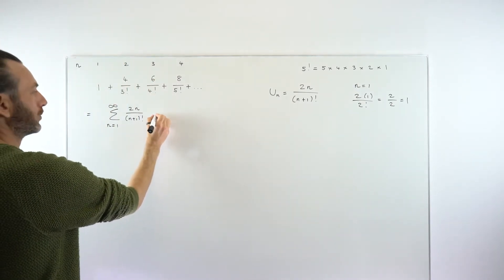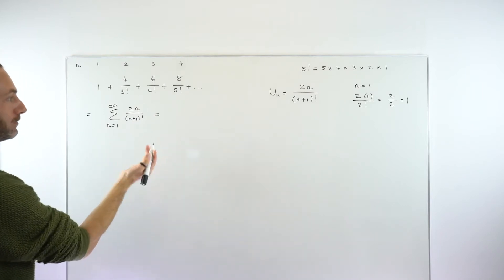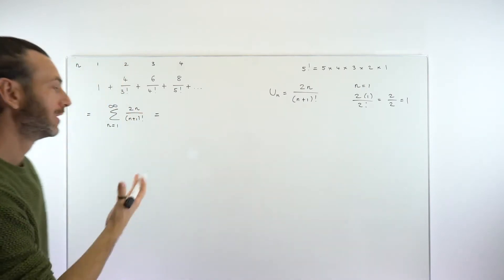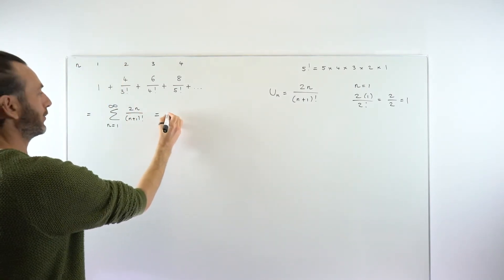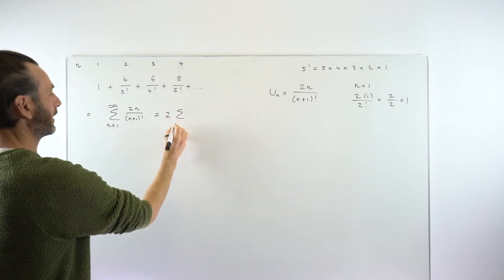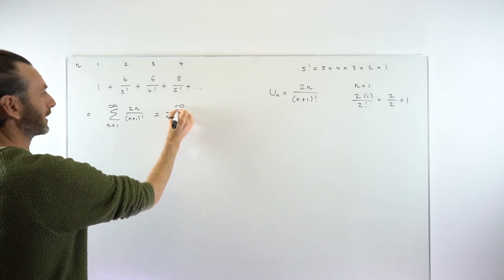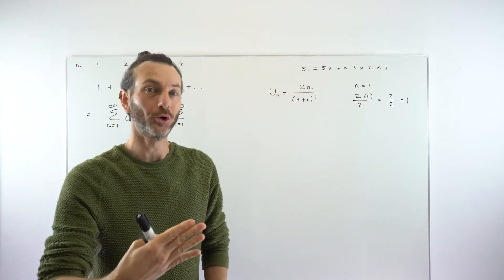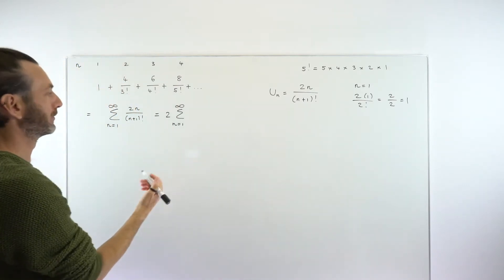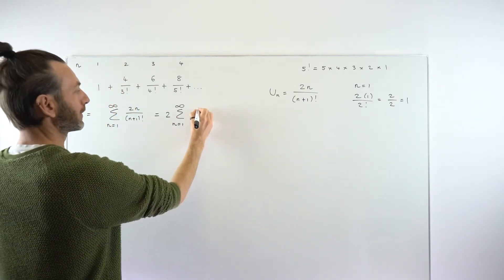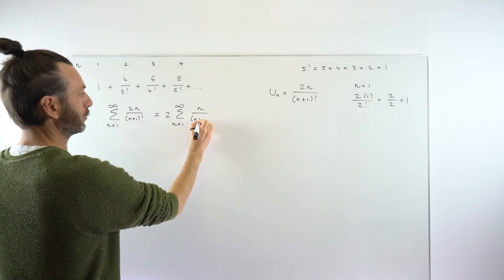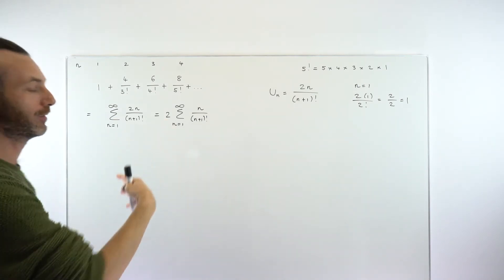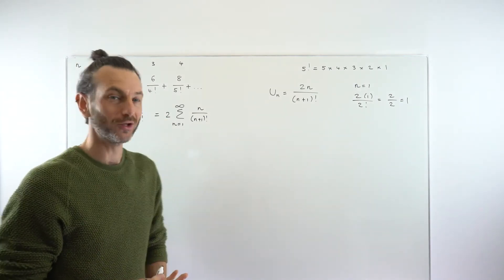We can simplify this: the 2 comes in front of the sigma sign. You don't have to do that, but it's a neat way of making it as simple as you can. If we pull the 2 through, that's because the 2 is not really playing any part in the formation of the series — it's just multiplying every term by 2, so we can pull it out the front like a common factor. And that just leaves us with n over (n+1)! inside the sigma. If you've got an opportunity to pull out a common factor in an infinite series, just do it, because it's going to make the algebra a little easier.